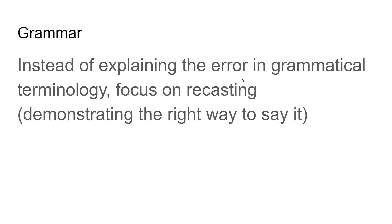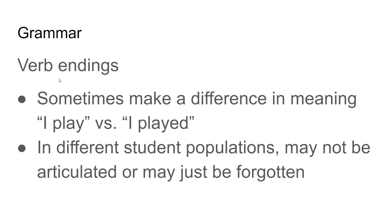For all three categories, the rule of thumb is demonstrating rather than explaining. Instead of explaining an error in grammar, focus on recasting it — say it the way you would say it and ask them to repeat, rather than telling them, for example, that their verb was in the wrong tense. One issue very likely to come up, especially with our current student population, is verb endings. Focus on things that inhibit understanding: a difference between a verb ending that changes meaning — like 'play' versus 'played' — matters more than one that doesn't, like 'he have' instead of 'he has,' which is still understandable even if grammatically incorrect.